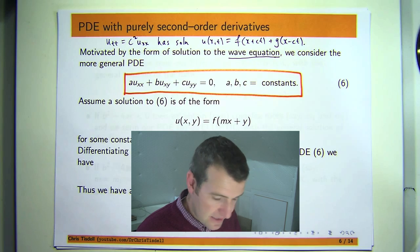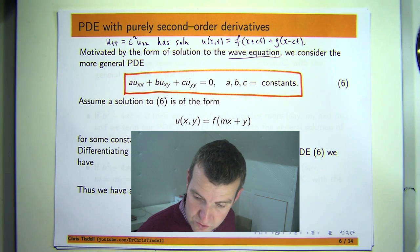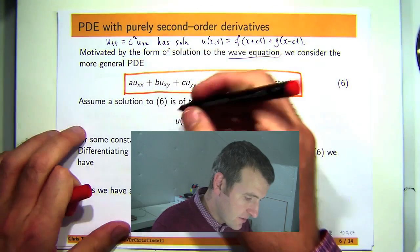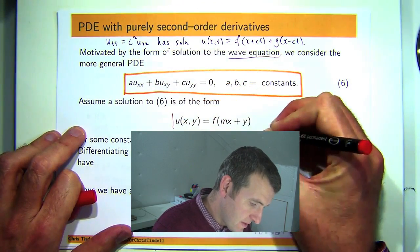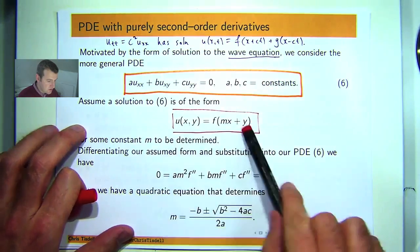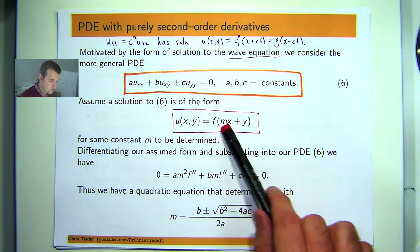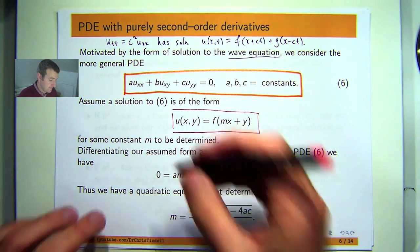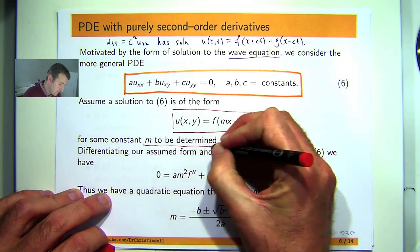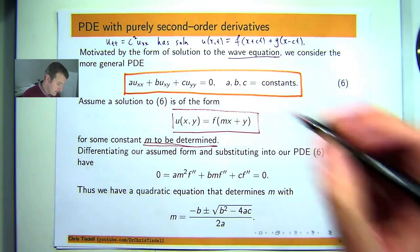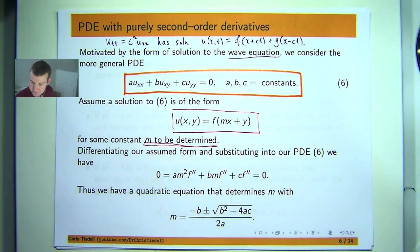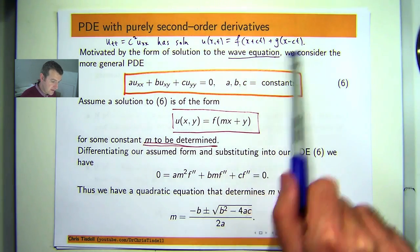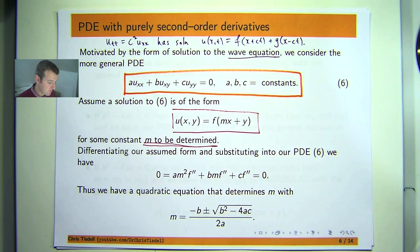So in this video we're going to tackle the slightly more general problem, equation 6, and we're going to assume that a solution to 6 is also a function of this similar linear form where M is a constant here, to be determined. This form is motivated by our work on the wave equation.